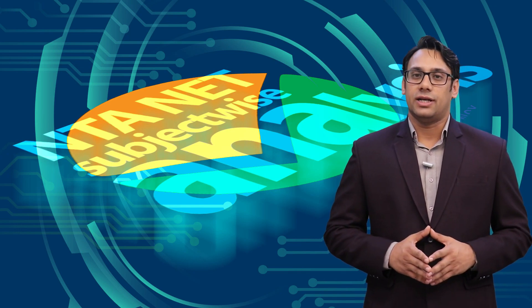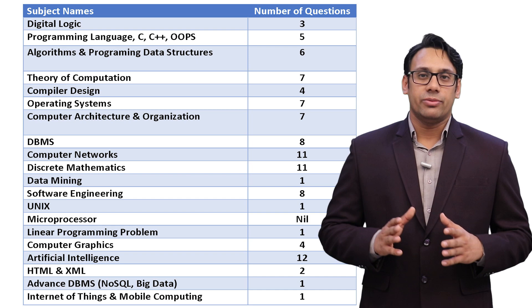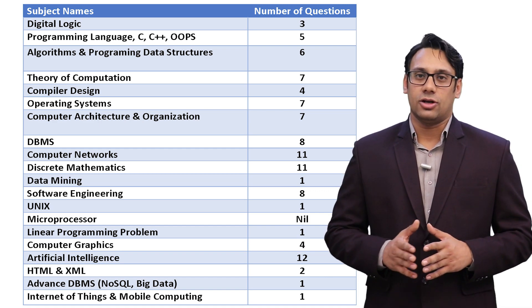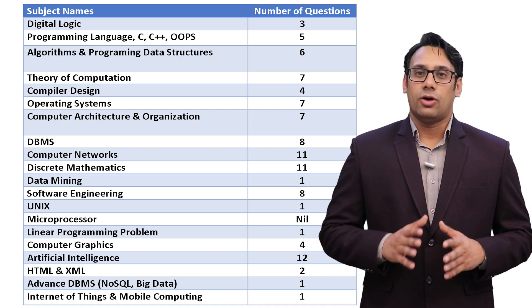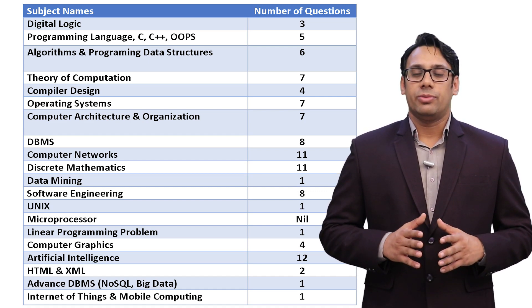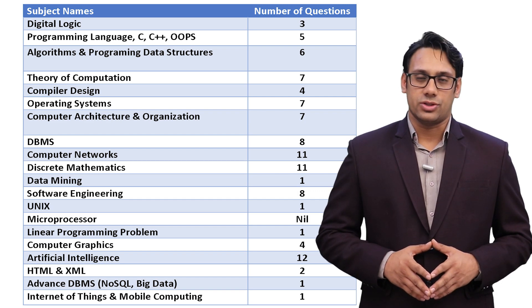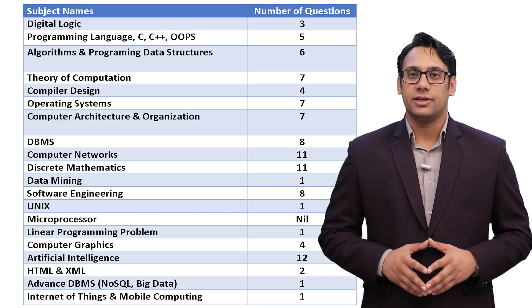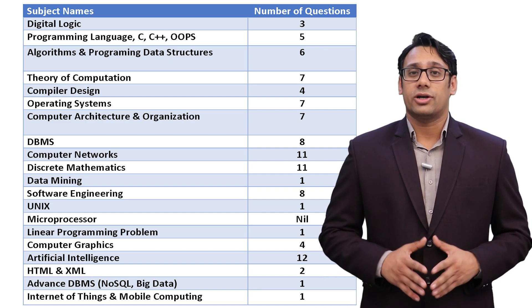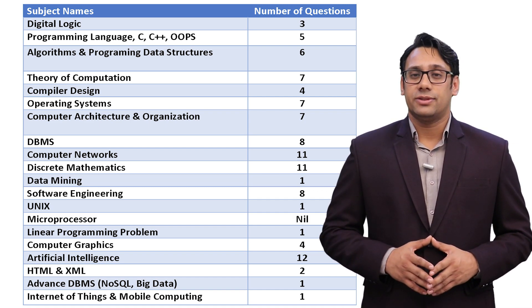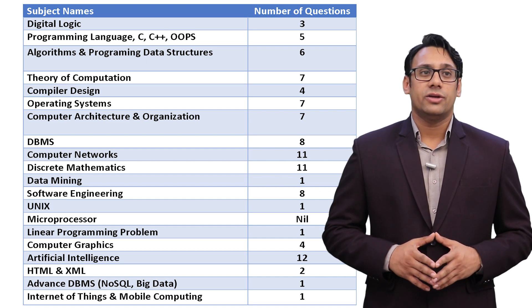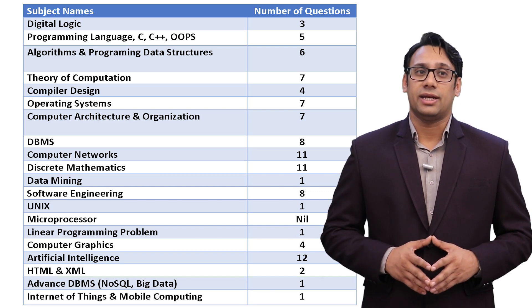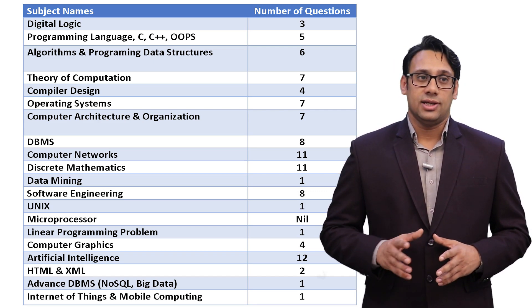Subject-wise breakdown for June 2019: Digital Logic — 3 questions. Programming methodology, C, C++, and Object-Oriented Programming — 5 questions. Data Structures and Algorithms — 6 questions. Theory of Computation — 7 questions. Compiler Design — 4 questions. Operating System — 7 questions. Computer Architecture and Organization — 7 questions. Database Management System — 8 questions. Computer Networks — 11 questions. Discrete Mathematics — 11 questions. Data Mining — 1 question.